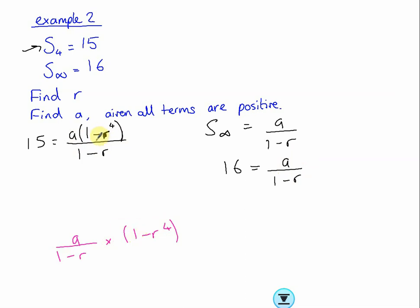We have this up here. So instead of writing a over 1 minus r, what we can do is write 16. So it would be 16 lots of 1 minus r to the power of 4, and that is equal to 15. I'm just going to get rid of that because I'm going to need this space.